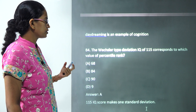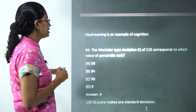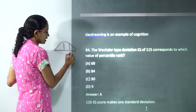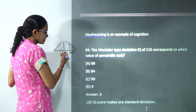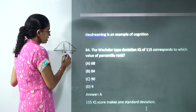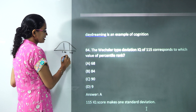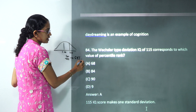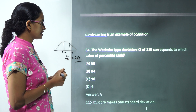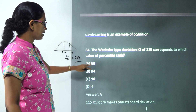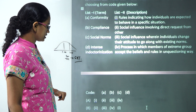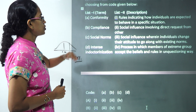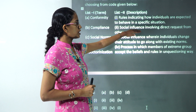The next question asks what percentile corresponds to a Wechsler deviation IQ of 115. Under Wechsler, one standard deviation is 15 points above the mean of 100, placing 115 at one standard deviation. One standard deviation accounts for 68 percent of the distribution, so 68 is the correct answer.